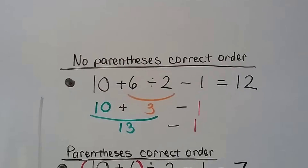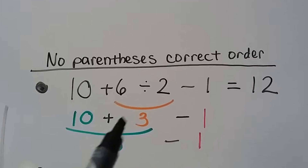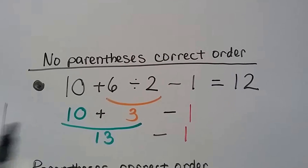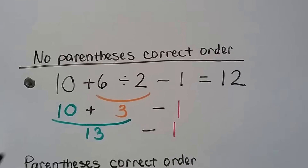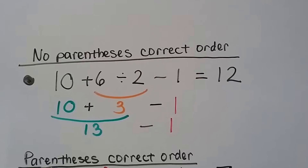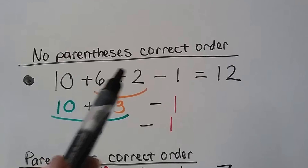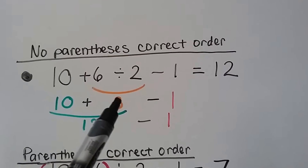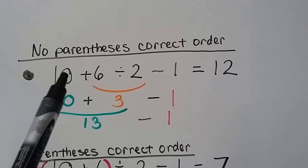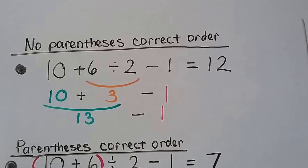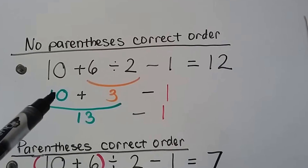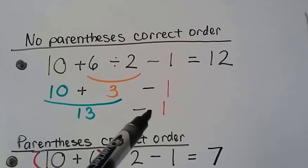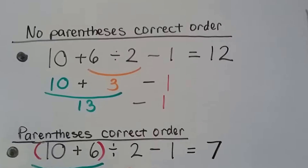Remember, it's multiply or divide left to right, and add or subtract left to right — whichever comes first. For example with no parentheses: there's no exponents, no multiplication, but there is division, so we do that first. 6 divided by 2 is 3. Then we add and subtract left to right: 10 plus 3 is 13, minus 1 gives us 12.